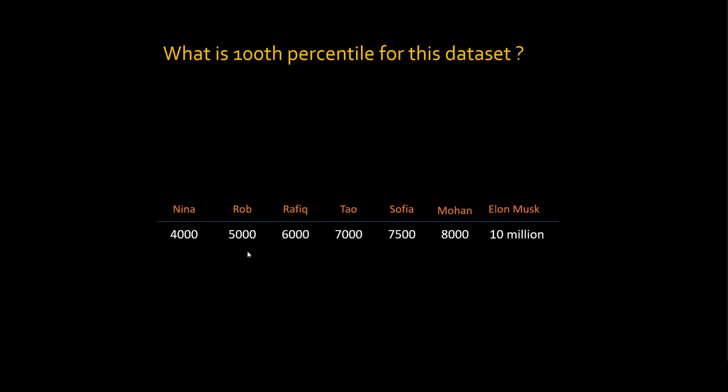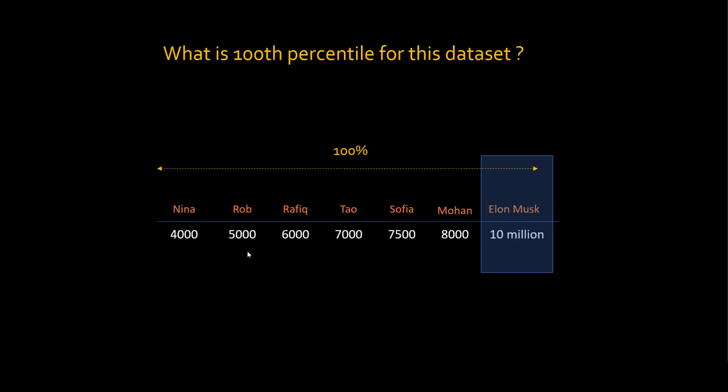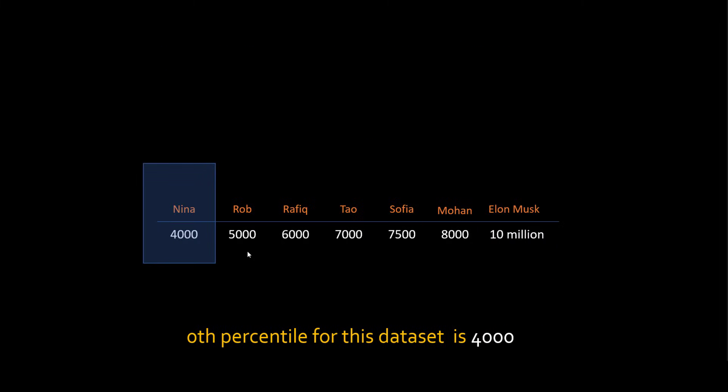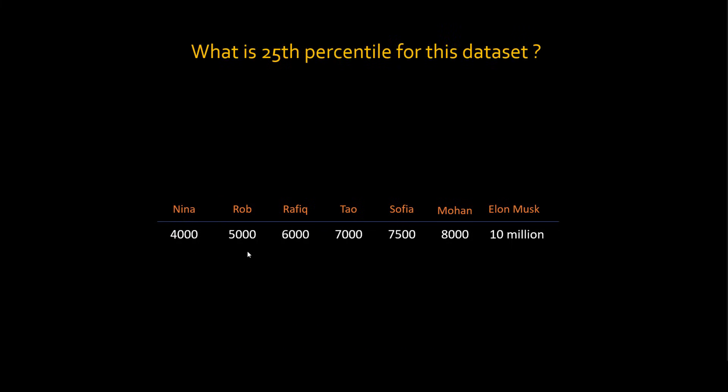Now think about it — what is my 100th percentile? Which is the value for which 100% of data points are less than or equal to that value? Well, obviously that value is 10,000,000. 100% of data points are less than or equal to 10,000,000, so the 100th percentile is 10,000,000. What is the 0th percentile? Obviously, 4,000.